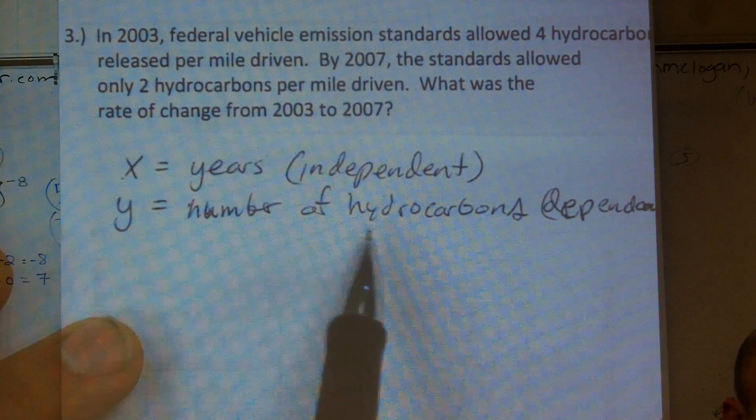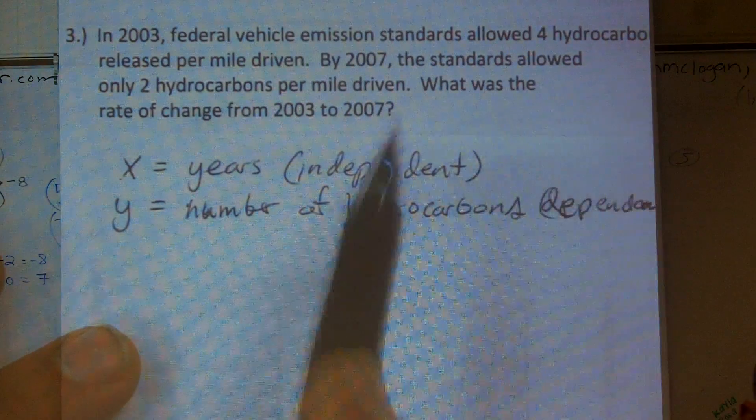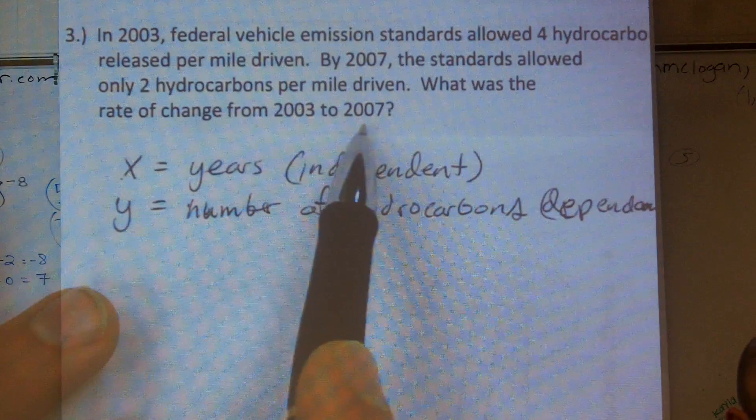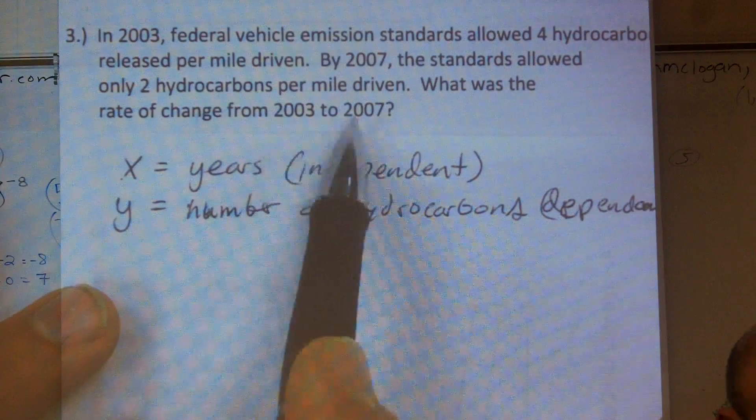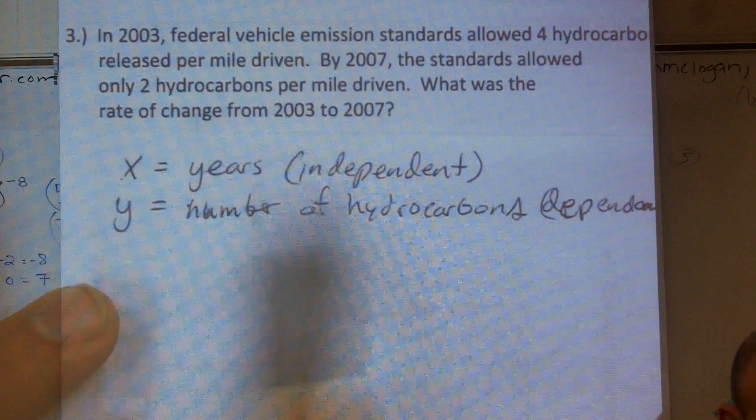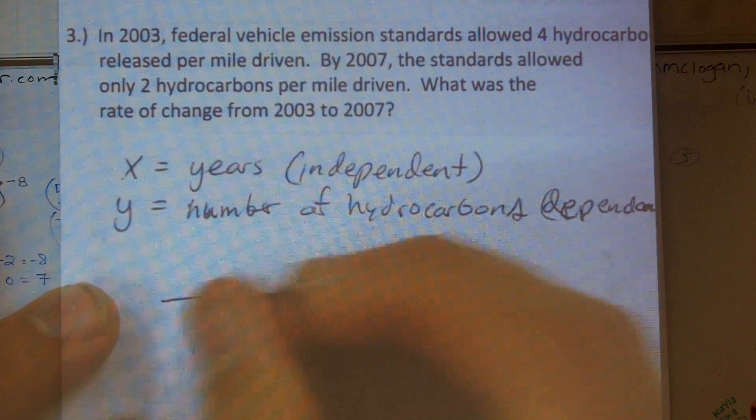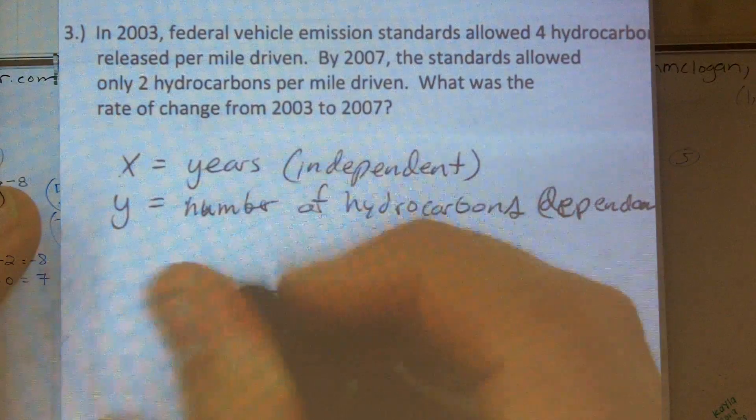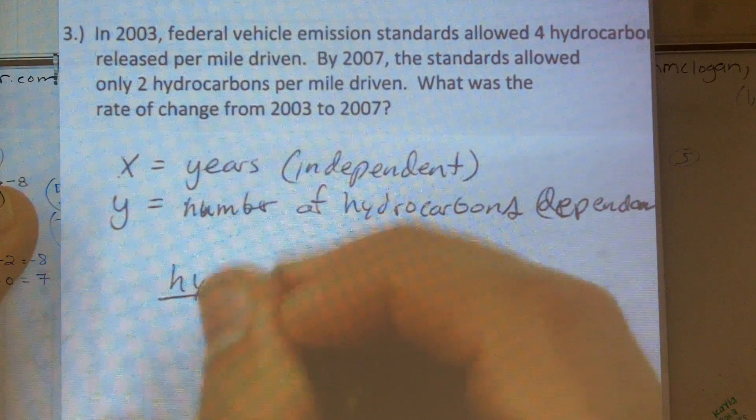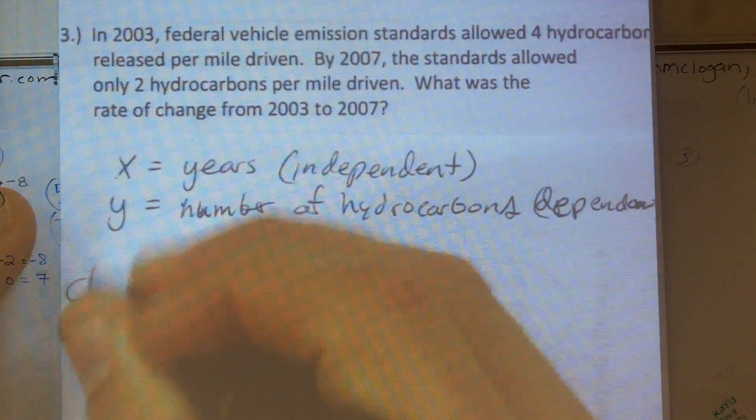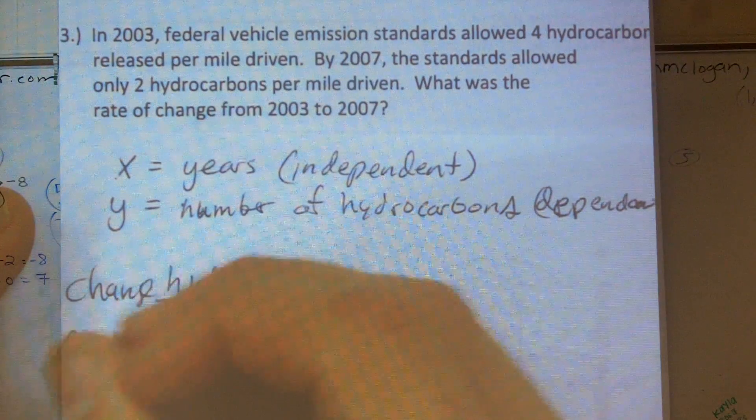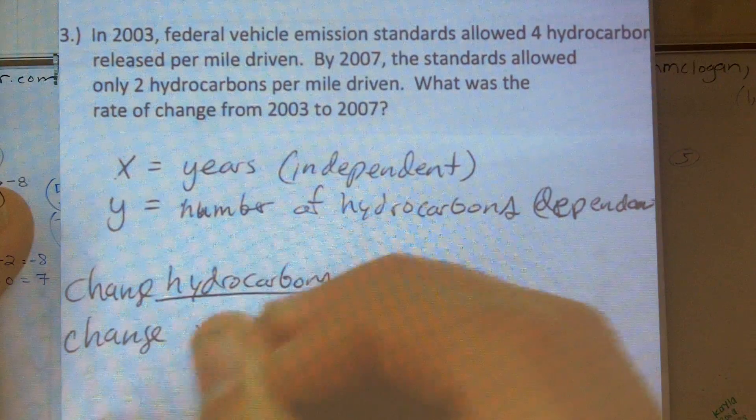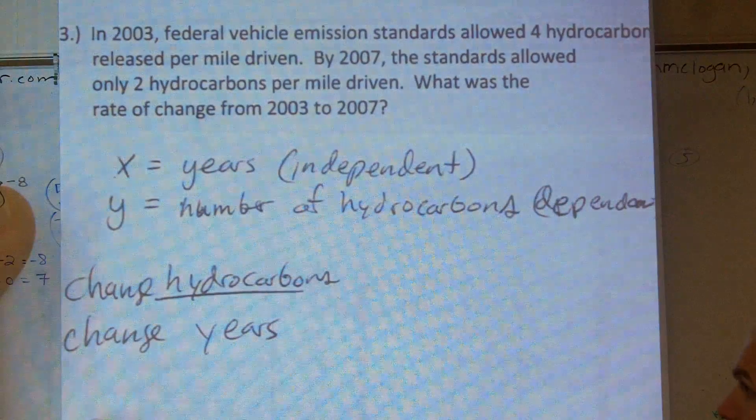So therefore, my change in y is my number of hydrocarbons. So what I have is from 2003 to 2007, right? So for 2003 to 2007, that was the number of years. So really what we're going to have is the change in hydrocarbons over the change in years.